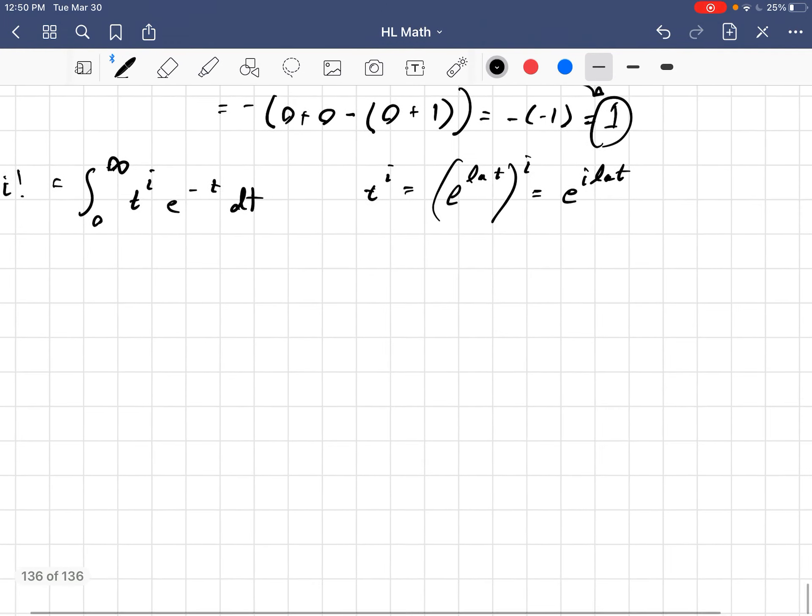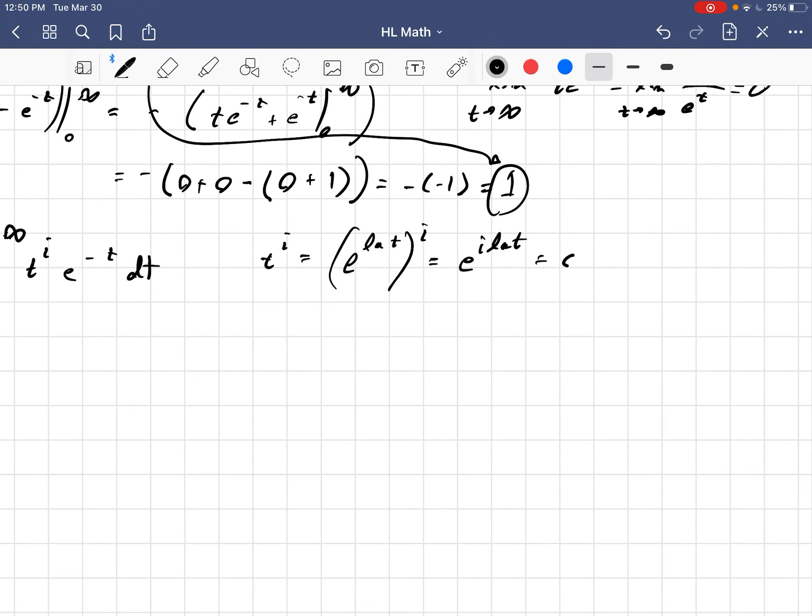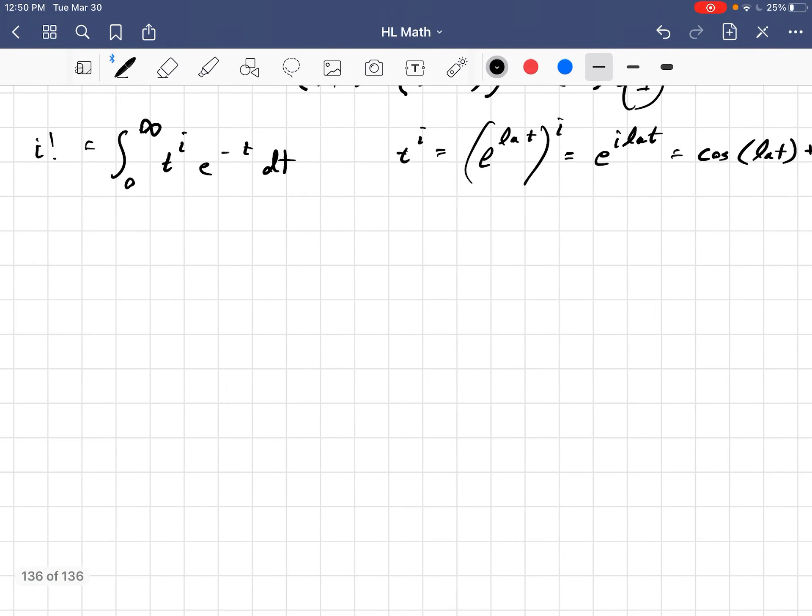Now, e to the i ln t could also be written as cosine of natural log of t plus i sine natural log of t. So what I can do is I can write this as the integral from 0 to infinity of e to the negative t cosine of natural log of t dt plus i, because i is a constant, so I can bring it out front, i times the integral from 0 to infinity of e to the negative t sine of natural log of t dt.